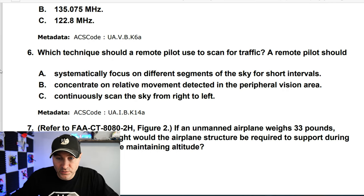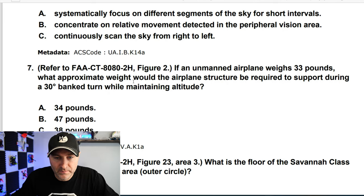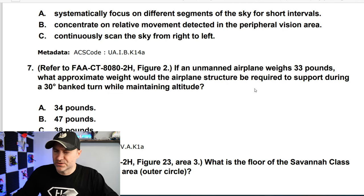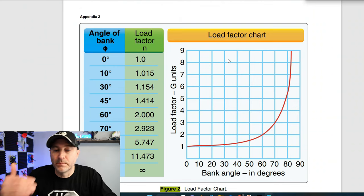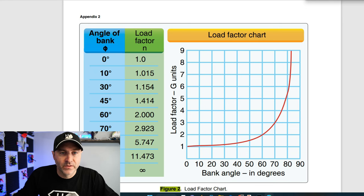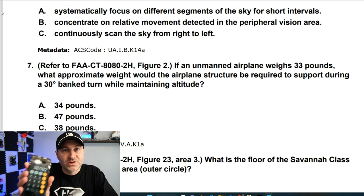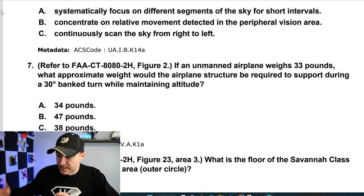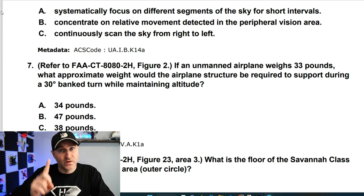According to figure 2, if the unmanned airplane weighs 33 pounds, what approximate weight would the airplane structure be required to support during a 30-degree banked turn while maintaining altitude? Pull up figure 2 — the load factor chart. At 30 degrees, the load factor is 1.154. Multiply 33 pounds by 1.154 and you get just over 38 pounds. 38 pounds is the answer. Note: you do get a calculator for the exam, but they don't let you use your phone.